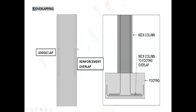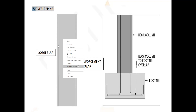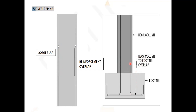Overlapping is required when the bar length is 12 meters but the floor-to-floor height is only about 3 meters. If we erect a full 12-meter bar, it will not stand and may fall. To avoid this, we cut the bar, leave an overlap length above the slab, and tie it with the next bar. This lap methodology is shown: a vertical member from below is extended and lapped with the new bar, like this.